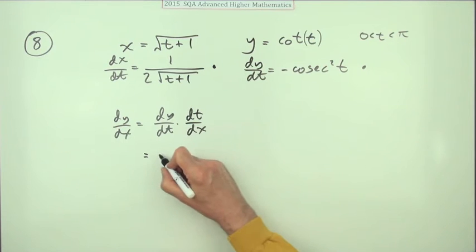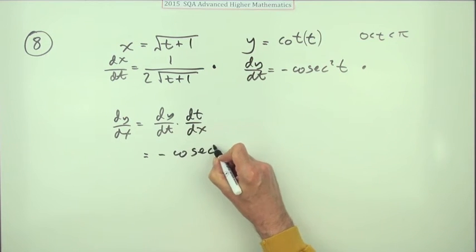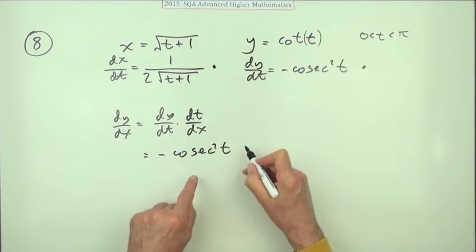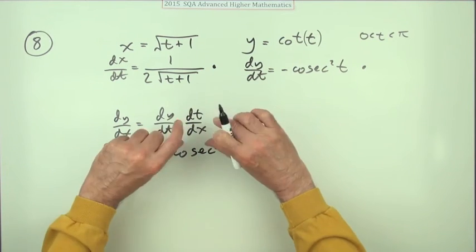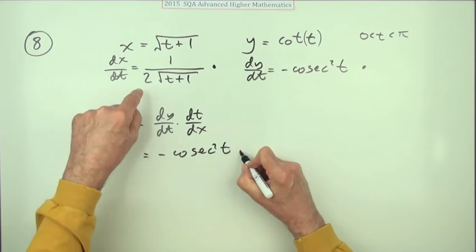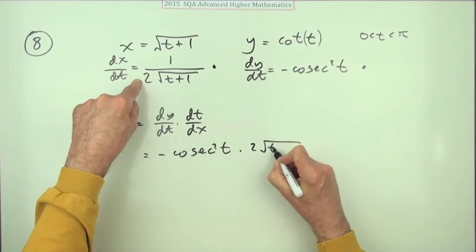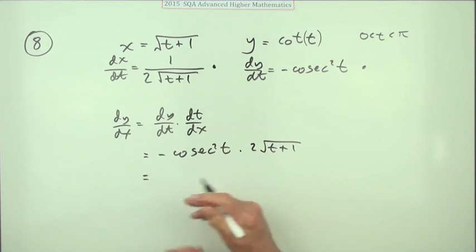When we've got this, for dy by dx you've got dy by dt, which is that -cosec²t, and dt by dx will be the reciprocal of this, so that'll just be times 2√(t+1), and you're there.